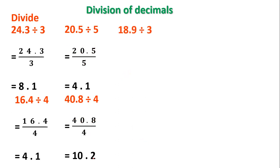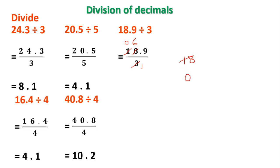Let's take the next problem: divide 18.9 by 3. Write the dividend in the numerator and the divisor in the denominator. Start dividing from the highest place to the lowest place. 3 ones are 3; 3 zeros are 0; 1 minus 0, remainder is 1. Join the next digit: number becomes 18. 3 sixes are 18; I write 6; 18 minus 18, remainder is 0. Now move to the decimal part — place the decimal point in the quotient.